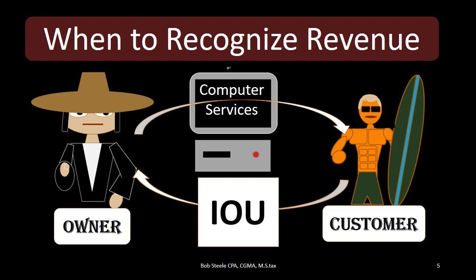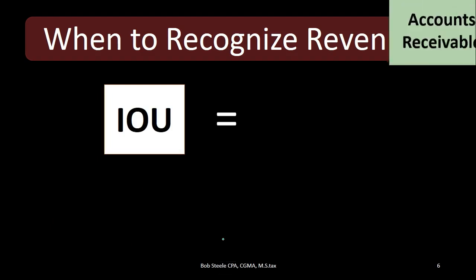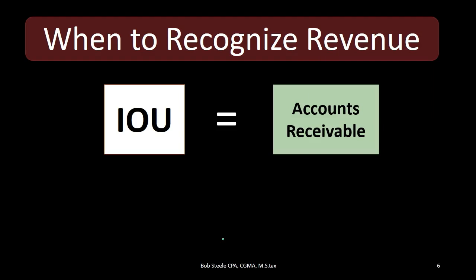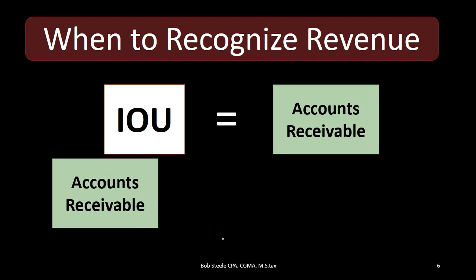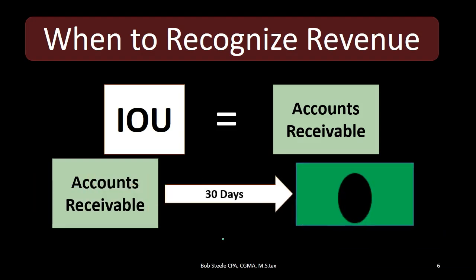We expect to receive cash in the mail for the work we've done and billed the client for. So we record revenue at the point in time the work was done, and we also have essentially an IOU — that's what the customer gives to the business owner. That IOU, to the owner, is equivalent to accounts receivable: an account tracking IOUs for work that has been done but payment not yet received. Accounts receivable are expected to be collected within a normal time period — perhaps 30 to 60 days — and converted to cash. Although accounts receivable is not the same as cash, it is still an asset because it represents what will be owed to the company.